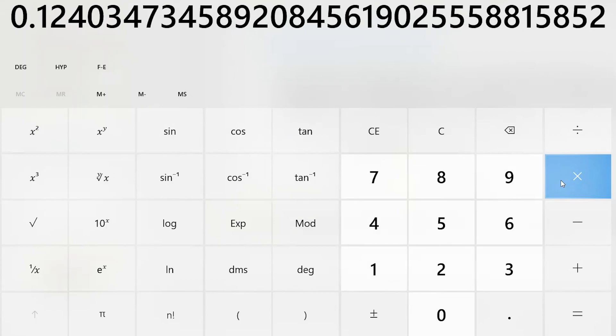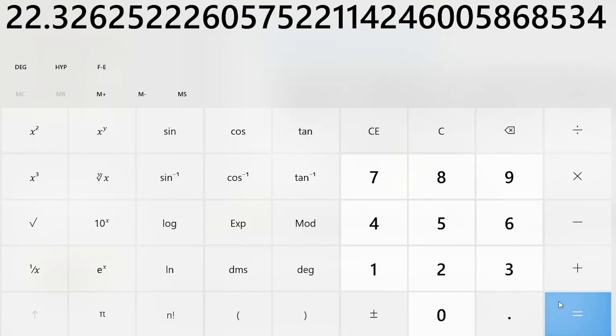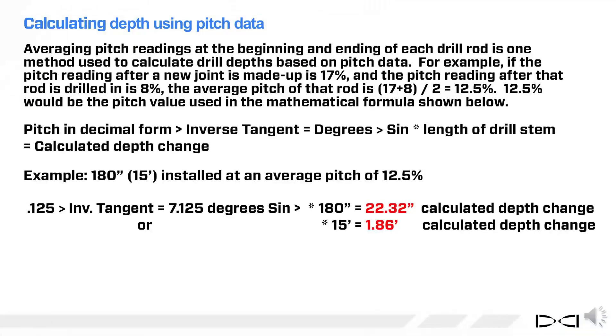If we're using inch as our measurement mode, we would multiply by 180, and that would give us a 22.32-inch calculated depth change. If we're using feet, I would multiply by 15, giving us a 1.86-foot calculated depth change. This formula also works with metric measurements as well.